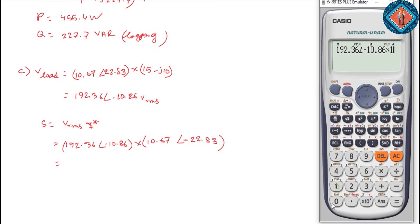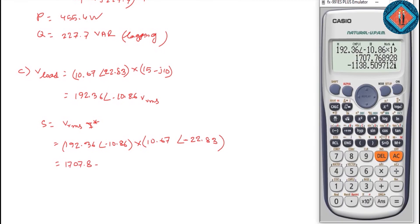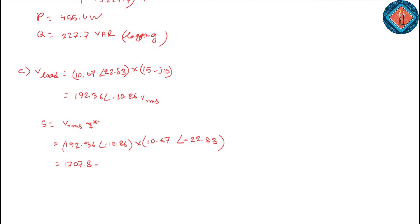Multiply 10.67 at an angle minus 22.83 degrees. The result is 1707.8 minus j1138.5, leading.